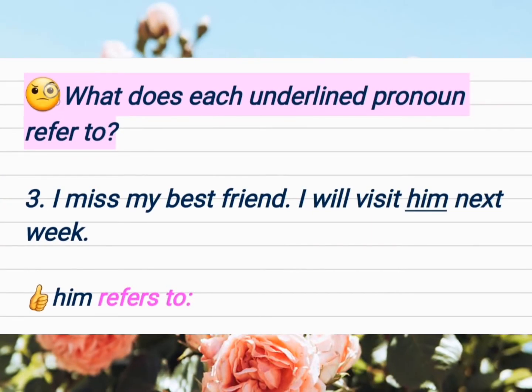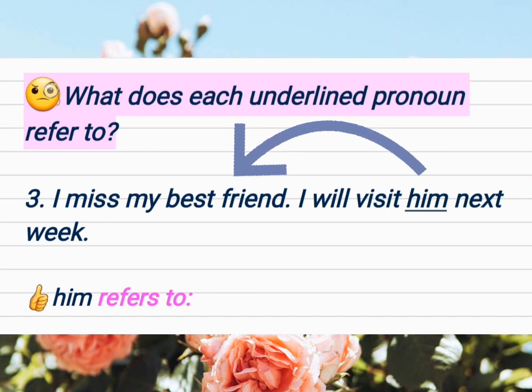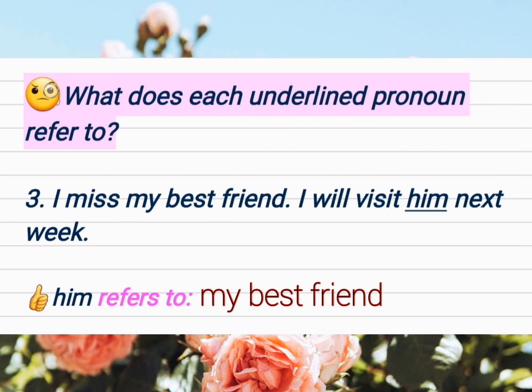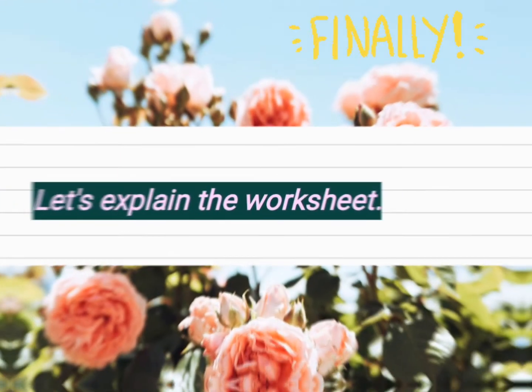'I miss my best friend. I will visit him next week.' The underlined pronoun here is 'him.' Whom will I visit next week? My best friend. So 'him' refers to 'my best friend.'